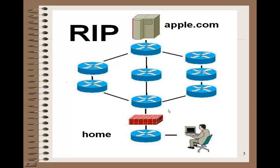If you notice this route here, it's going to be one, two, three, four, five devices to reach Apple. The center one is one, two, three. And then the one on the left is one, two, three, four. So the shortest path — the fewest devices — is the one in the middle with only three devices. So your hop count would be one, two, three, four, and that's the route RIP would choose.